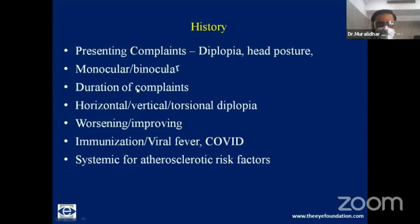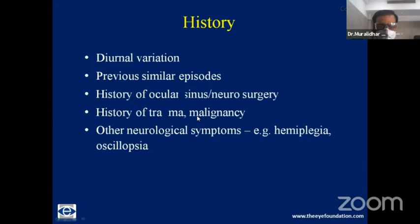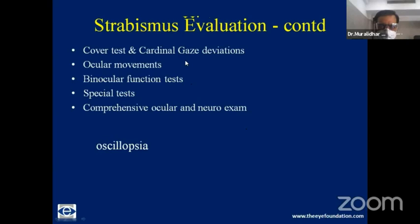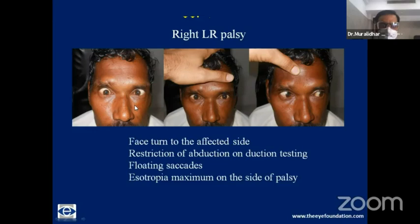In the history, ask whether diplopia is monocular or binocular. Also ask about history of COVID, history of malignancy, and history of ocular, sinus, and neurosurgery. For a patient with right sixth nerve palsy, there is a face turn to the affected side and restriction of abduction. Abduction testing is very important. Floating saccades should also be assessed. Sometimes the restriction of movement may not be that obvious — it can be subtle even in a verified sixth nerve palsy.